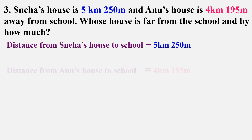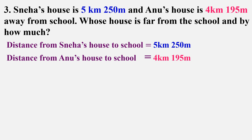Next step: distance from Anu's house to school is 4 kilometers 195 meters. Whose house is far from the school? We know that 5 kilometers 250 meters is more than 4 kilometers 195 meters, so naturally Sneha's house is far from the school.